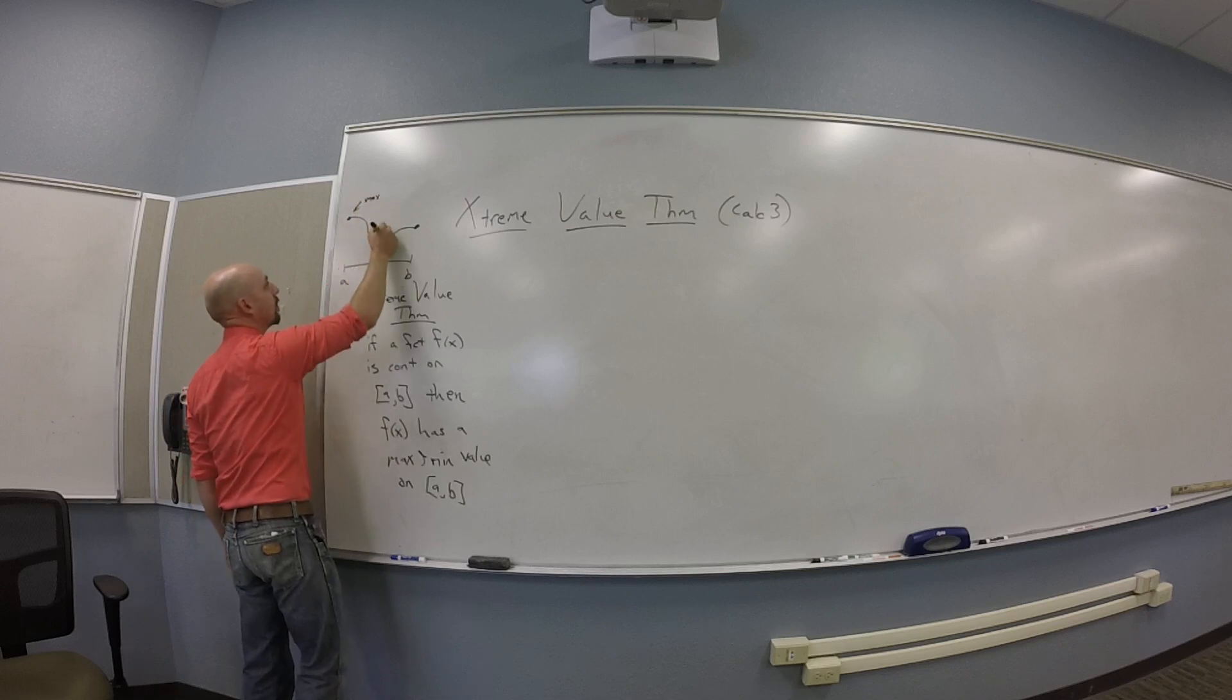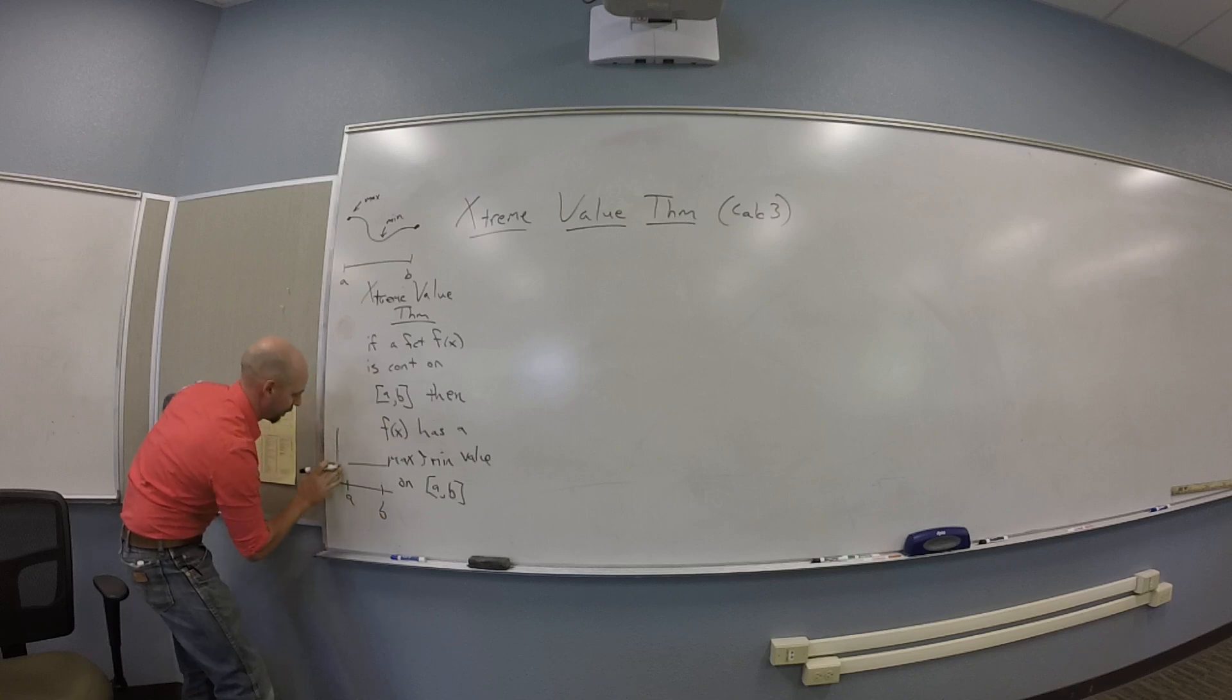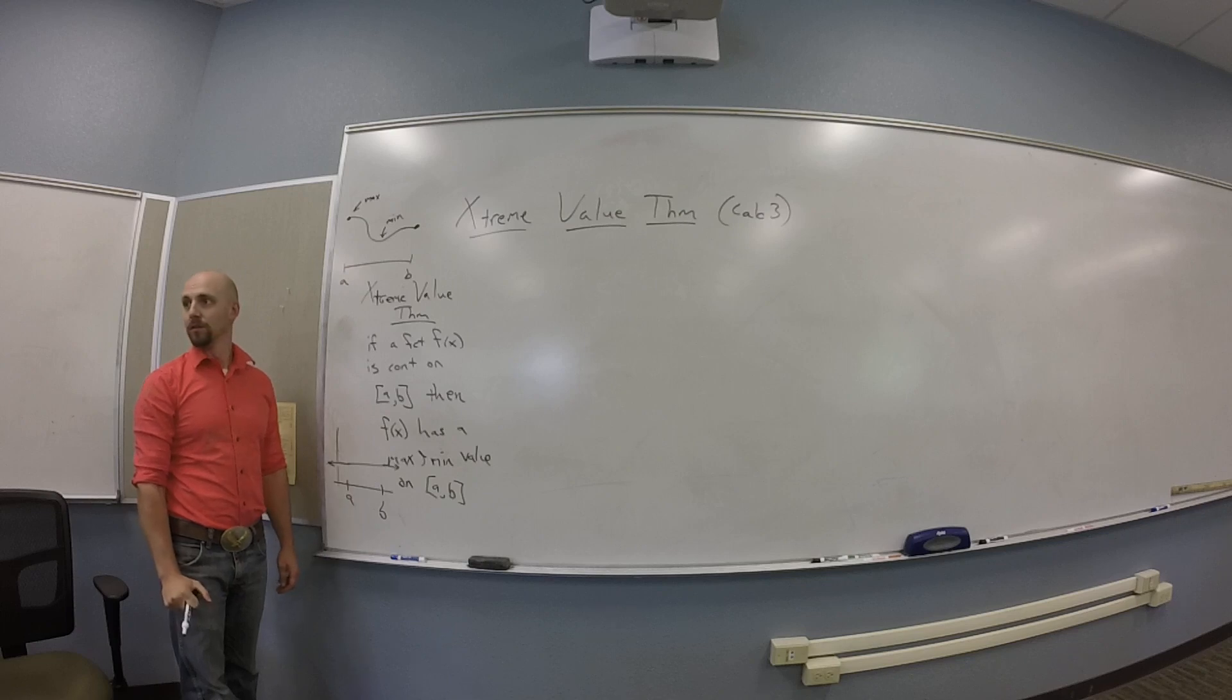What about a horizontal line? Good question. Here's your horizontal line. There's a, there's b. The max and min are both in the same spot. Your max and your min are the same value, and they are whatever the height of the horizontal line. Do you guys see that?